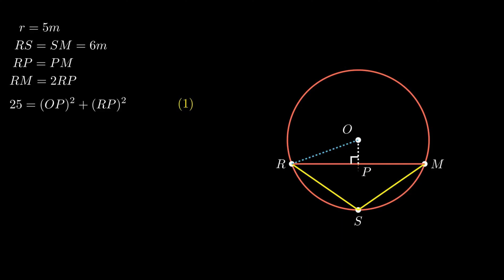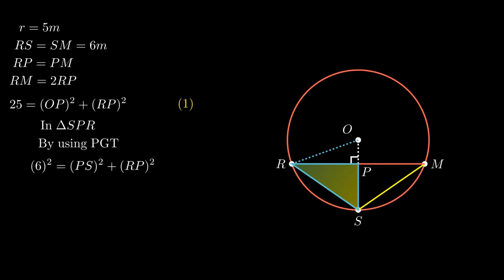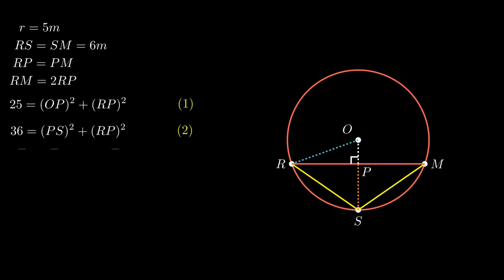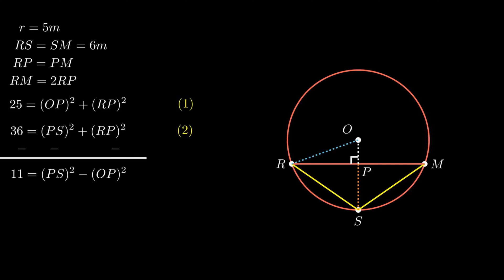In order to solve equations with two variables, we need to form another equation with the same variables. We extend segment OP to point S, resulting in right-angled triangle SPR. In triangle SPR, by Pythagoras theorem, 6 squared equals PS squared plus RP squared, which simplifies to 36 equals PS squared plus RP squared. On subtracting equation 1 and 2, we get 11 equals PS squared minus OP squared. From the figure, sum of segment OP and segment PS equals segment OS, which is the radius and equals 5 meters. Let segment OP equal X, therefore segment PS becomes 5 minus X.